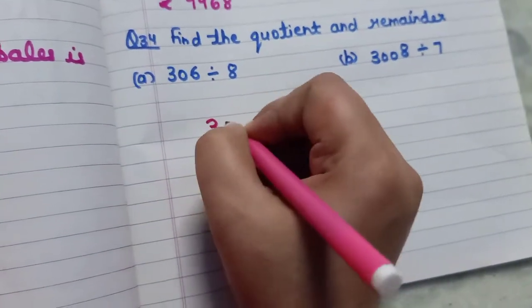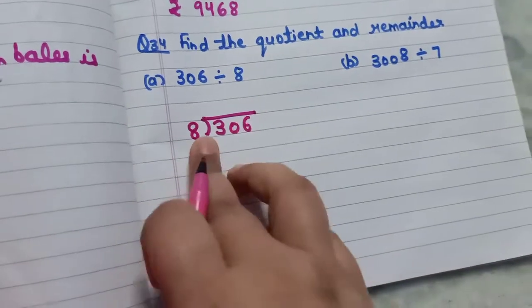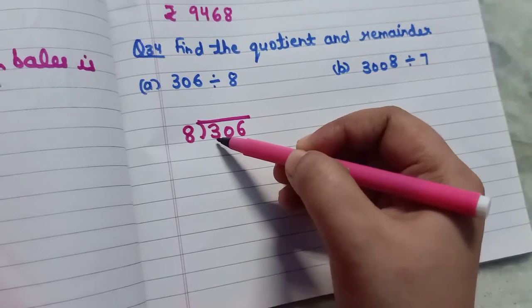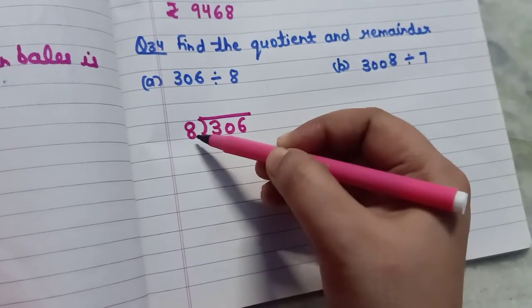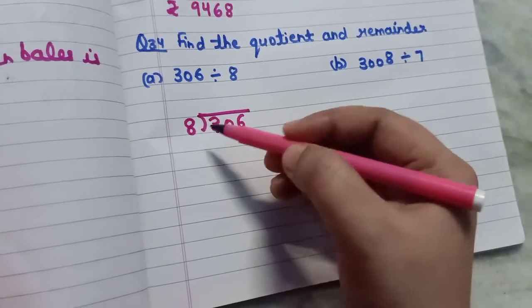You are going to write 306 inside this bracket and 8 you are going to write outside the bracket. First of all just check the first number, 3 is smaller than 8. So it means we will be taking 2 digits together.